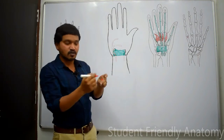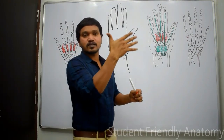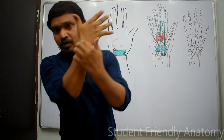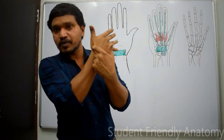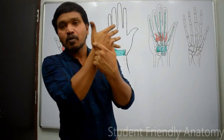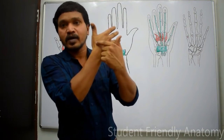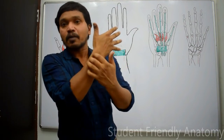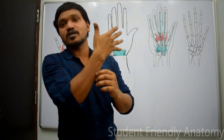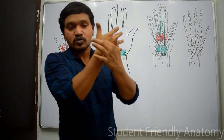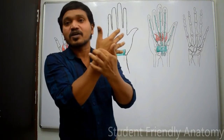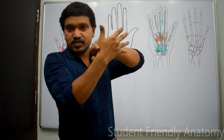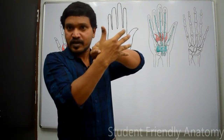The anatomical snuff box is a triangular depression visible when the thumb is fully extended. It is bounded medially by extensor pollicis longus, and laterally by abductor pollicis longus and extensor pollicis brevis. The radial artery enters this depression — the anatomical snuff box.